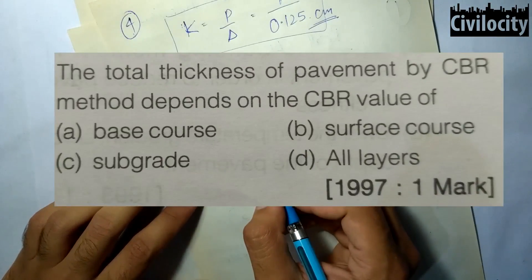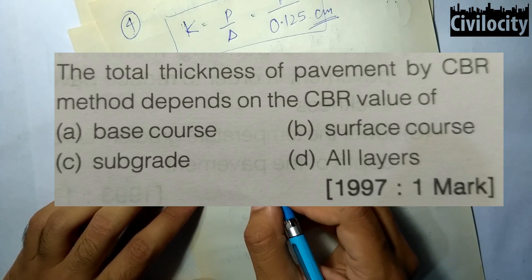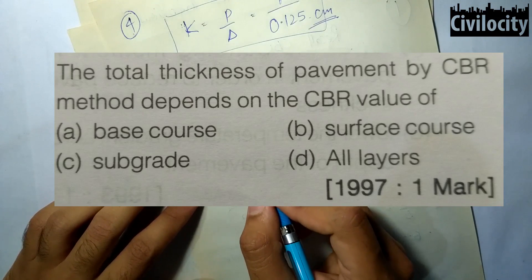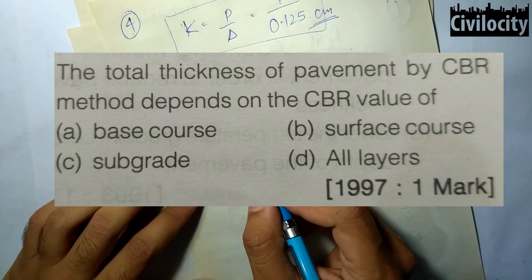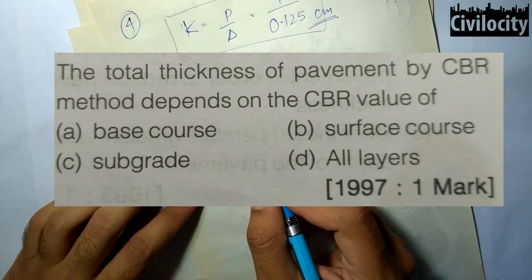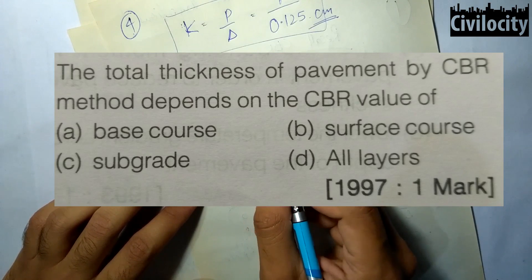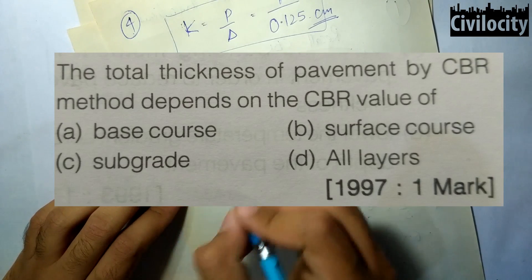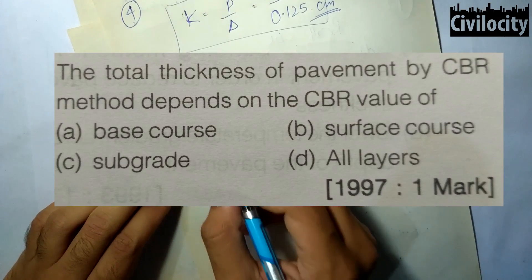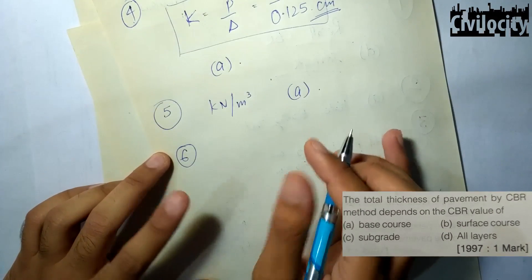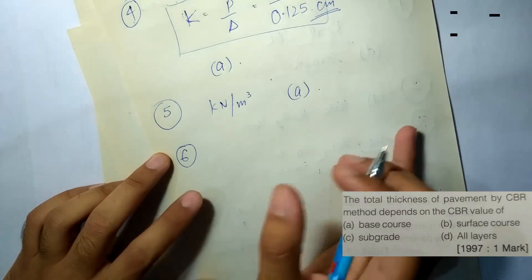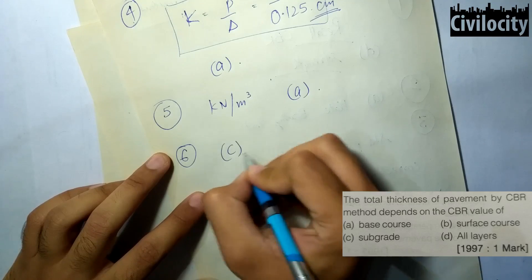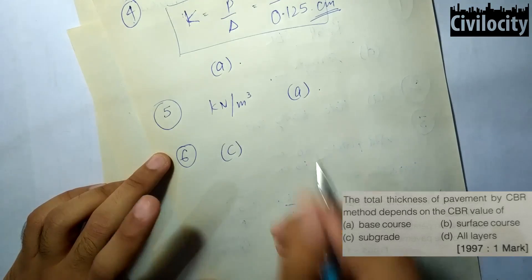The next question: the total thickness of pavement by the CBR method depends on the CBR value of which layer? Recalling that the CBR test was developed to evaluate the strength of sub-grade and other pavement materials for the design and construction of flexible pavements, the answer is: sub-grade.